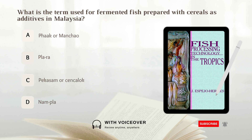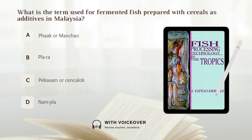What is the term used for fermented fish prepared with cereals as additives in Malaysia? A. Pak or manchao. B. Plara. C. Pekasam or chanchalok. D. Nampla. Answer: C. Pekasam or chanchalok.